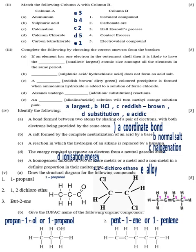Part 2 Answers: a 3, b 4, c 2, d 5, e 1. Part 3: a largest, b HCl, c reddish brown, d substitution, e acidic. Part 4: a coordinate bond, b normal salt, c halogenation, d ionization energy, e alloy. Part 5: a the structural formulas are shown, b 1 it is propane-1-ol or 1-propanol, 2 is pent-1-ene or 1-pentene.